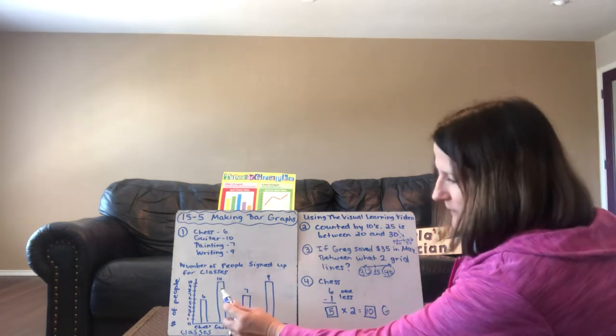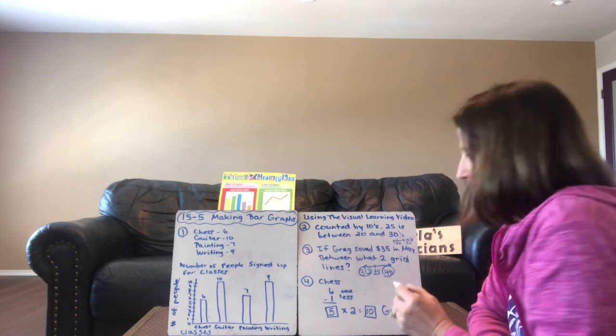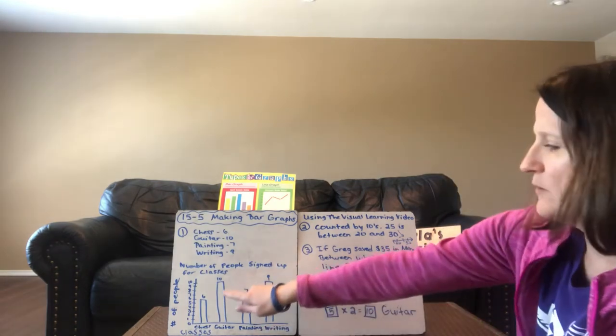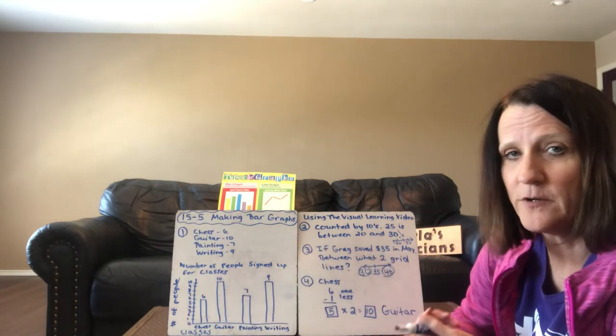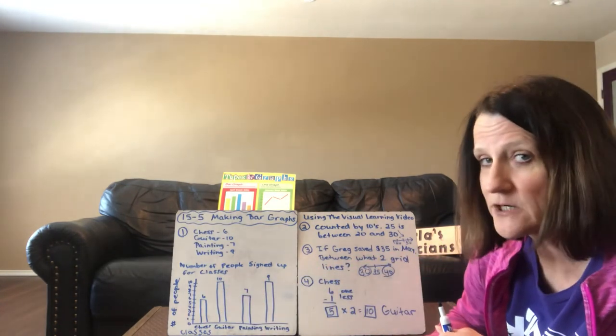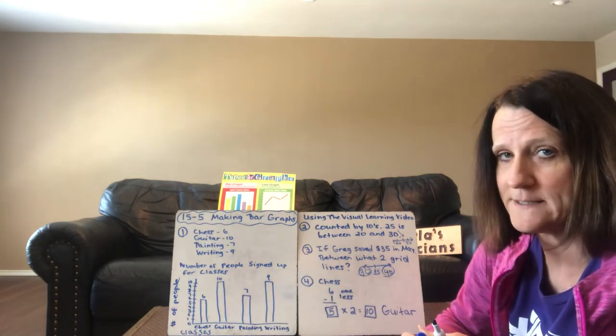10 people. So right here, 10 people signed up for guitar. We can tell by looking at the bar graph. And again, remember how I want you to put the numbers at the top of the bar. So anytime you're doing a bar graph or a pictograph, put the numbers out beside it because that will help you solve the problems related to that.